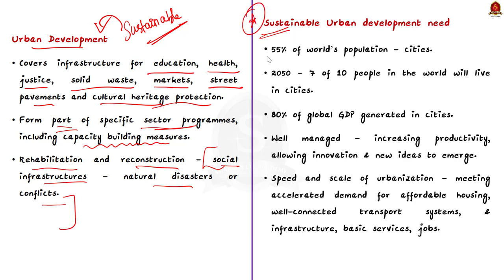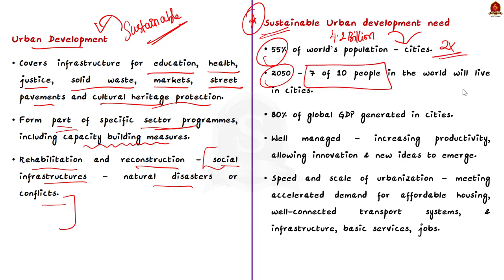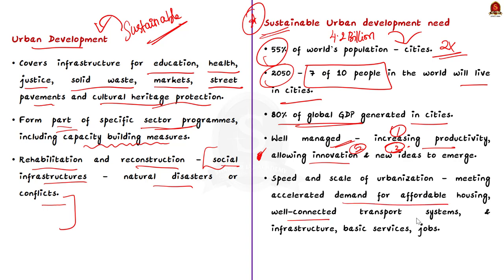Today, some 55% of the world's population — that is 4.2 billion inhabitants — live in cities. This trend is expected to continue. By 2050, with the urban population more than doubling its current size, nearly 7 out of 10 people in the world will live in cities. More importantly, with more than 80% of global GDP generated in cities, urbanization can contribute to sustainable growth if managed well by increasing productivity and allowing innovation and new ideas to emerge. However, the speed and scale of urbanization brings challenges including meeting accelerated demand for affordable housing, well-connected transport systems and other infrastructure, basic services, as well as jobs — particularly for the nearly 1 billion urban poor who live in informal settlements.